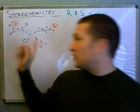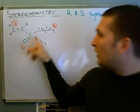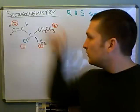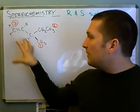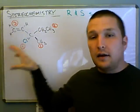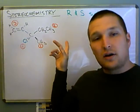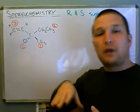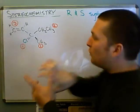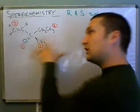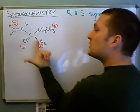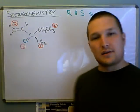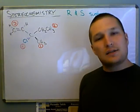In the last video, we assigned priority to all of the groups on the chiral center of this molecule, but in step three, in order to decide if this is R or S, we have to take the lightest priority or the lowest priority substituent and rotate it away from us. As we're looking at this right now, the lowest priority is facing towards us. So, how are we going to deal with this?